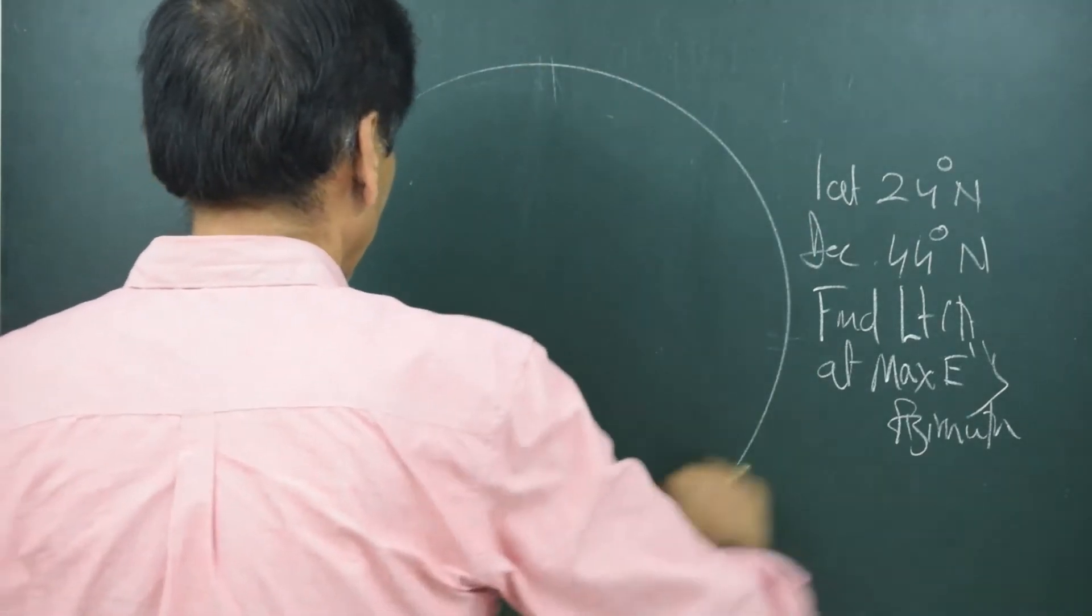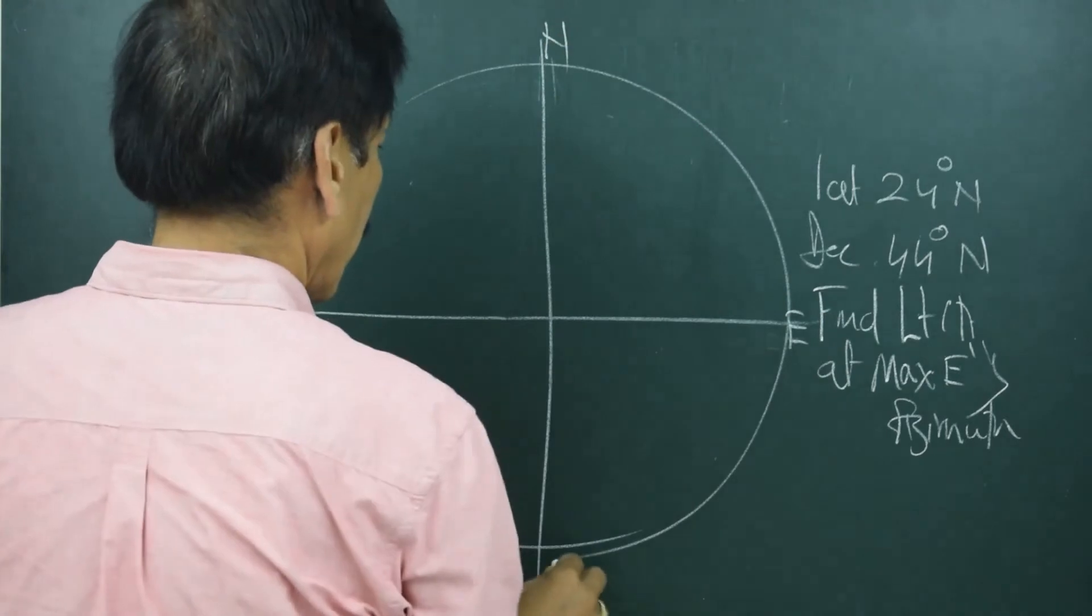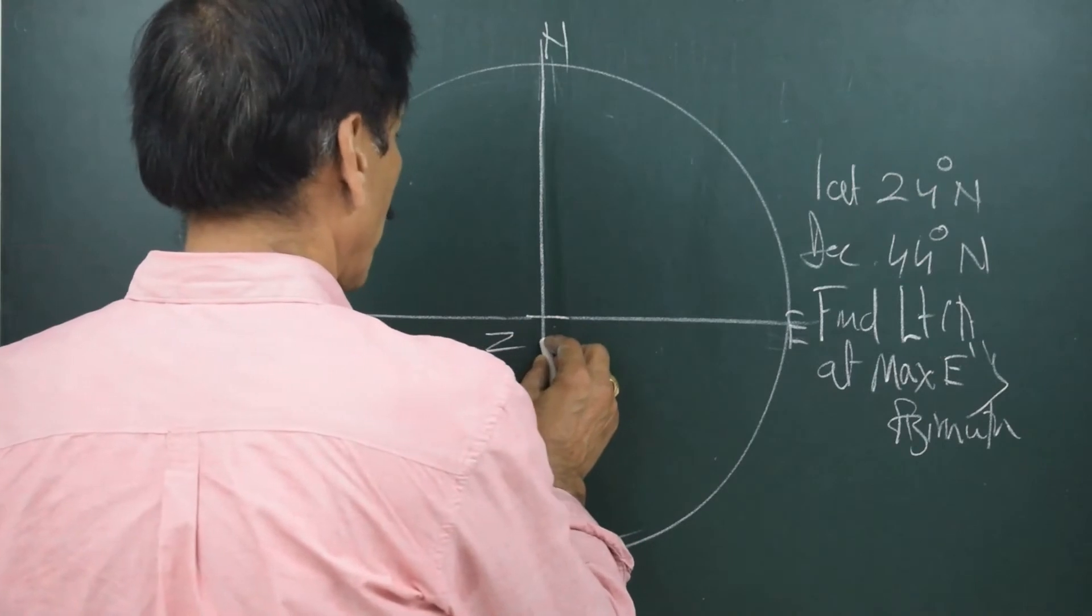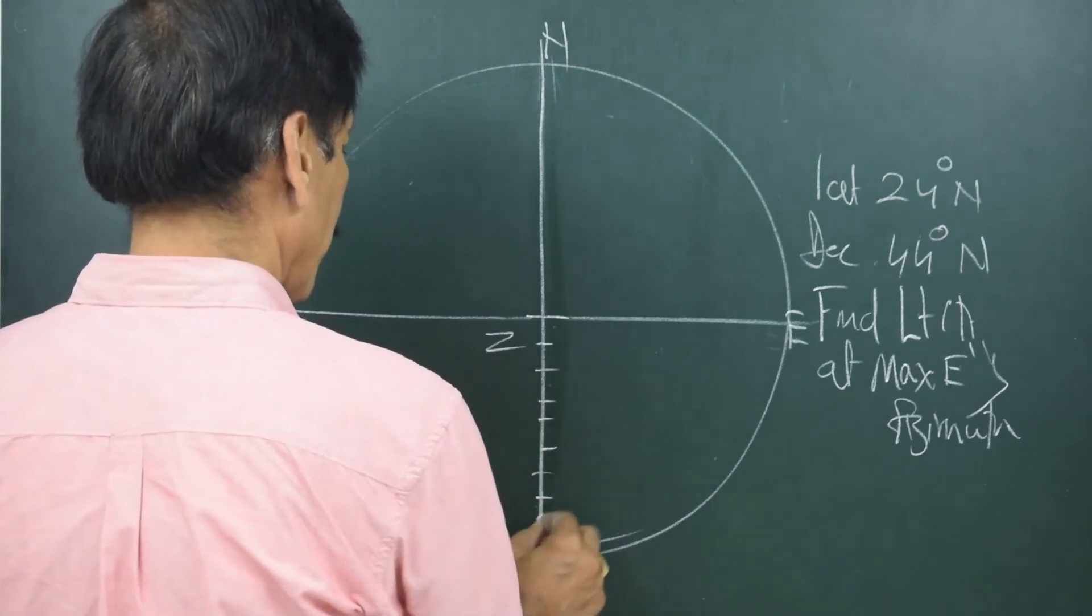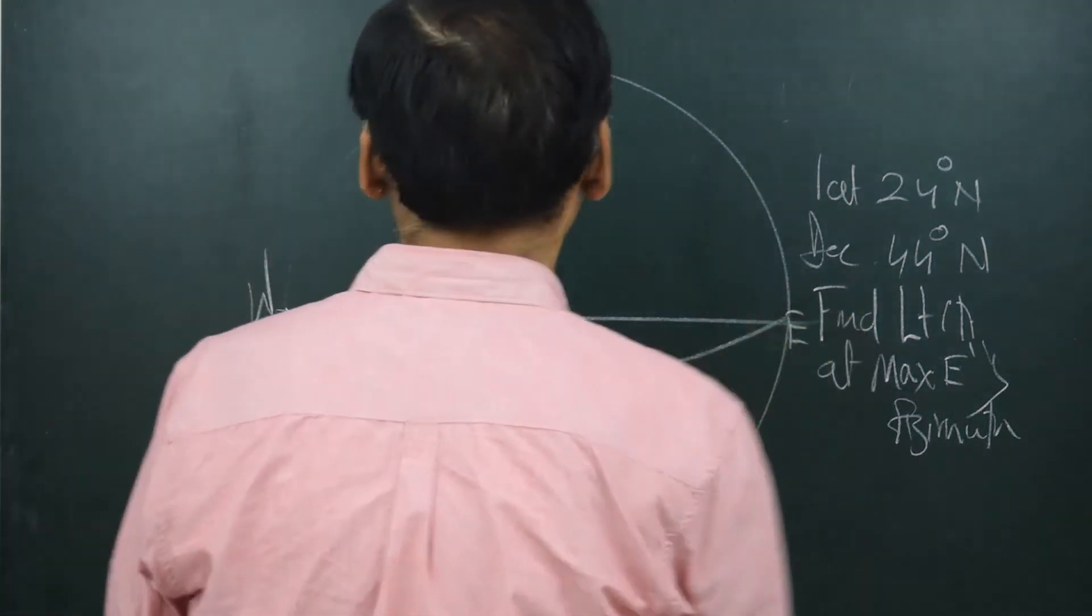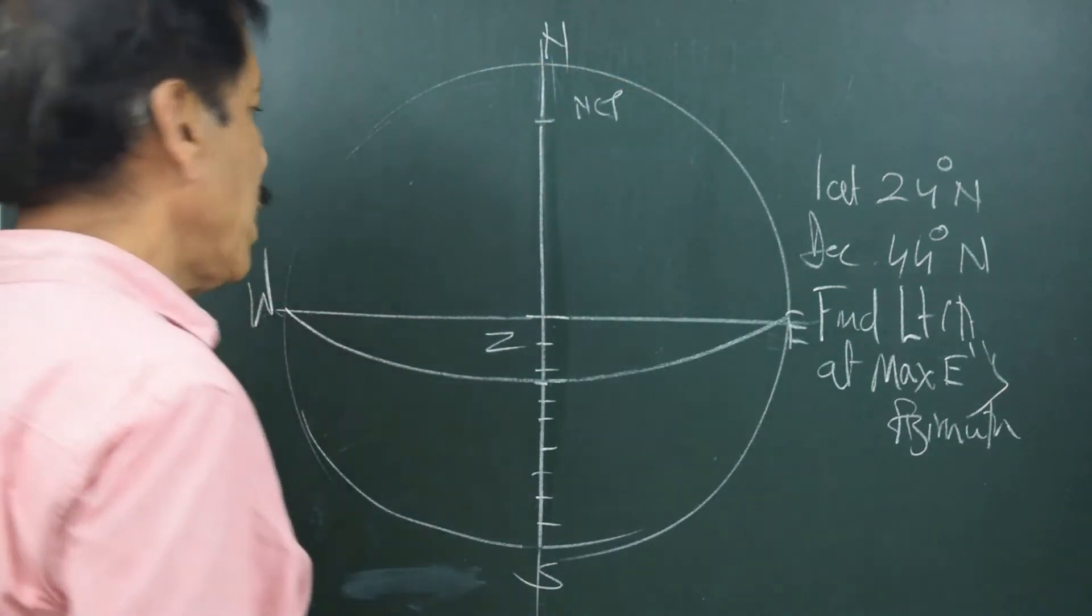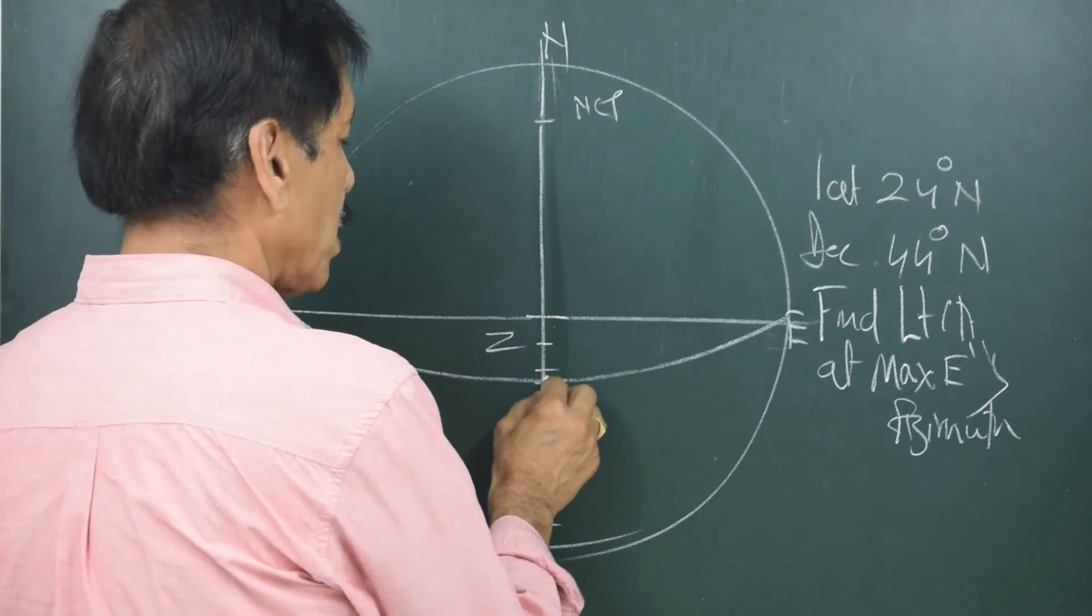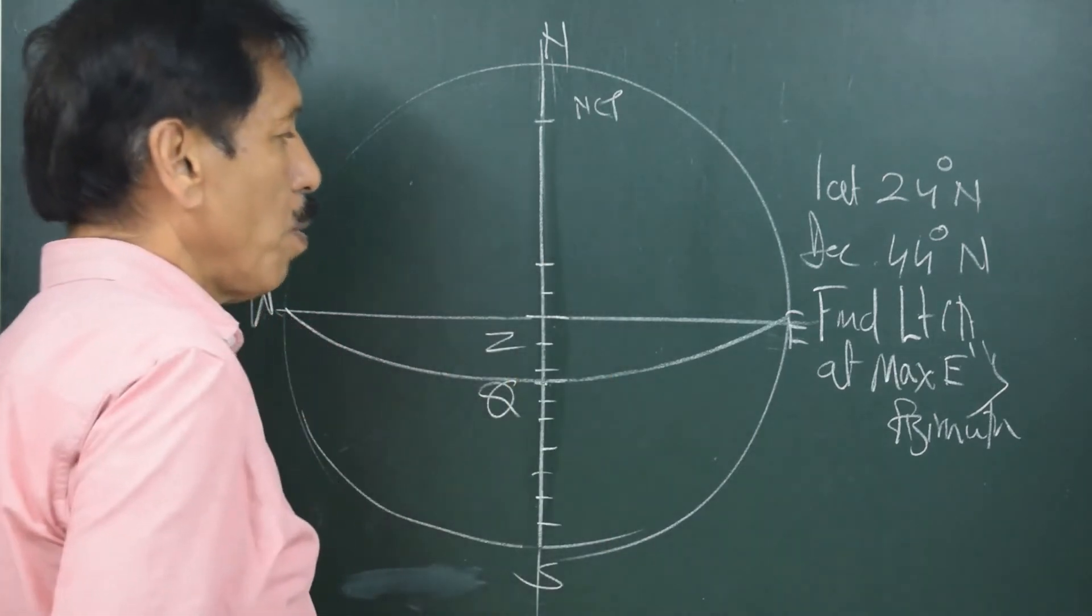Let us draw the observer's rational horizon diamond. Draw a circle. Divide it in 4 parts. West, east, north, south. Latitude 24 degrees north. So what I do is I divide it in 9 parts. 24 means this is the point and I draw the equinoxial from here. The pole will come down by the same amount. This is north celestial pole. Declination is 44 degrees that means 44 degrees north of equinoxial. This is the equinoxial point Q. From here 44 degrees upwards means it would be body would be passing from here.